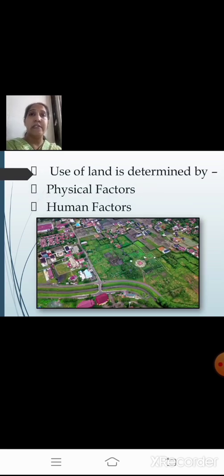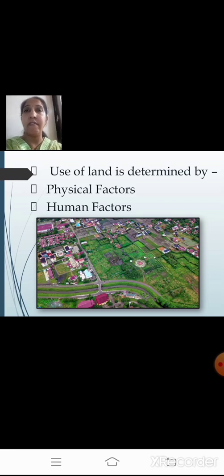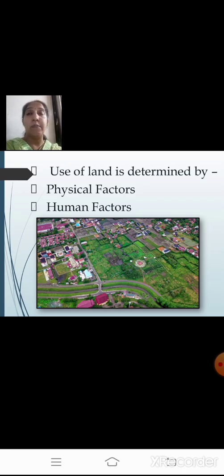Use of land is determined by physical factors as well as human factors. The physical factors include: topography — a detailed map of surface features of land such as hilly regions, mountains, or riverbeds; soil, since not every type of soil is fit for agriculture; climate, which is the most important factor; minerals — if that land has minerals, it is suitable for mining; and availability of water.